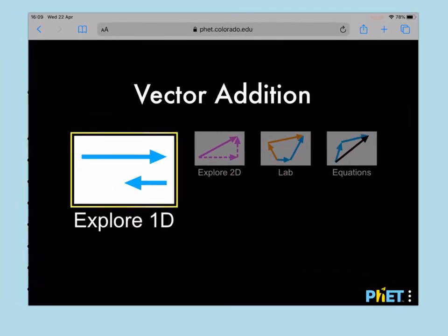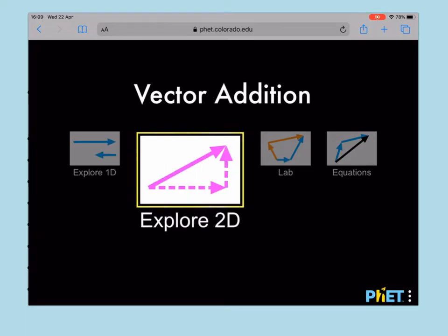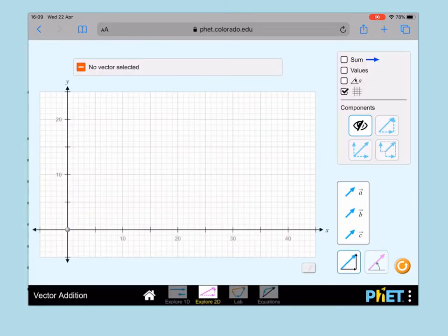OK, so when you open up the PhET simulation, you're going to click on Explore 2D. And once you've done that, then you are going to click on this red minus sign at the top.